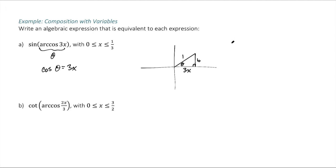We'll call that b, and use the Pythagorean Theorem. 3x squared plus b squared equals 1 squared. This is 9x squared plus b squared equals 1, and then we subtract the 9x squared over 1 minus 9x squared.